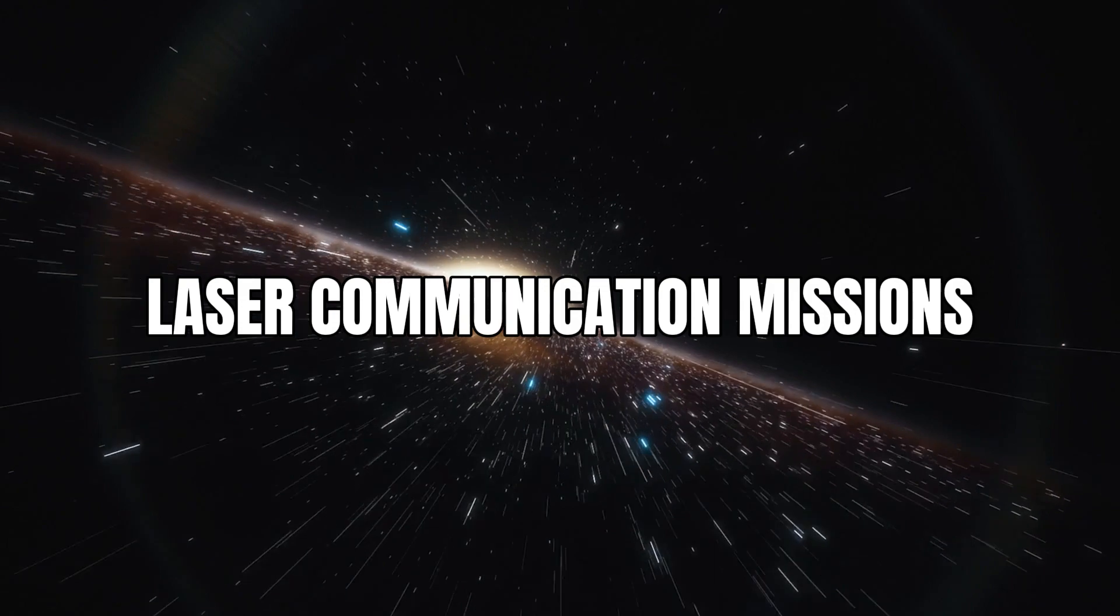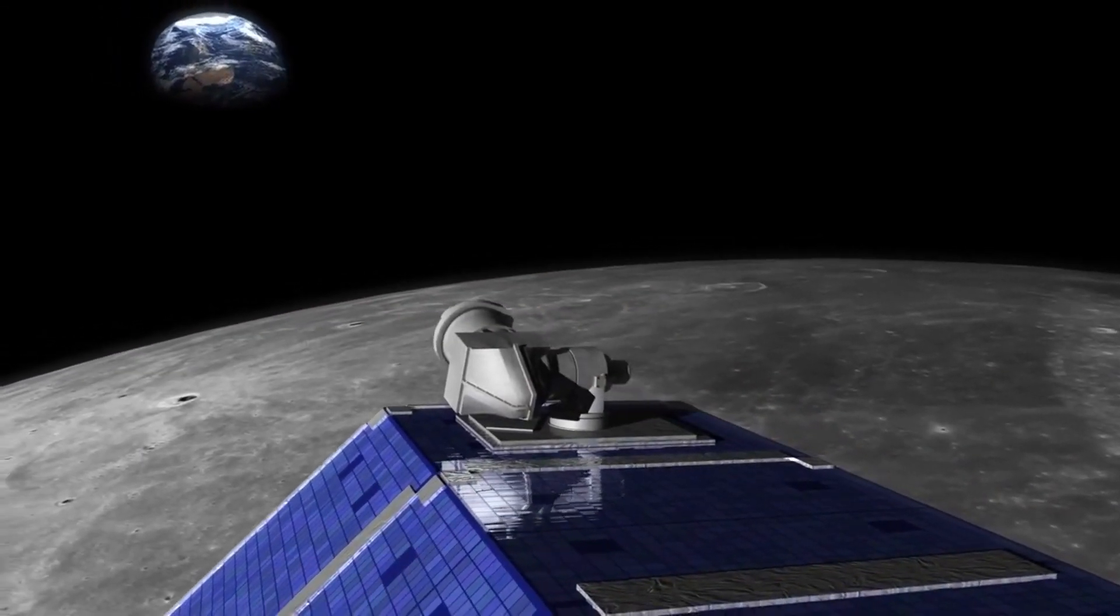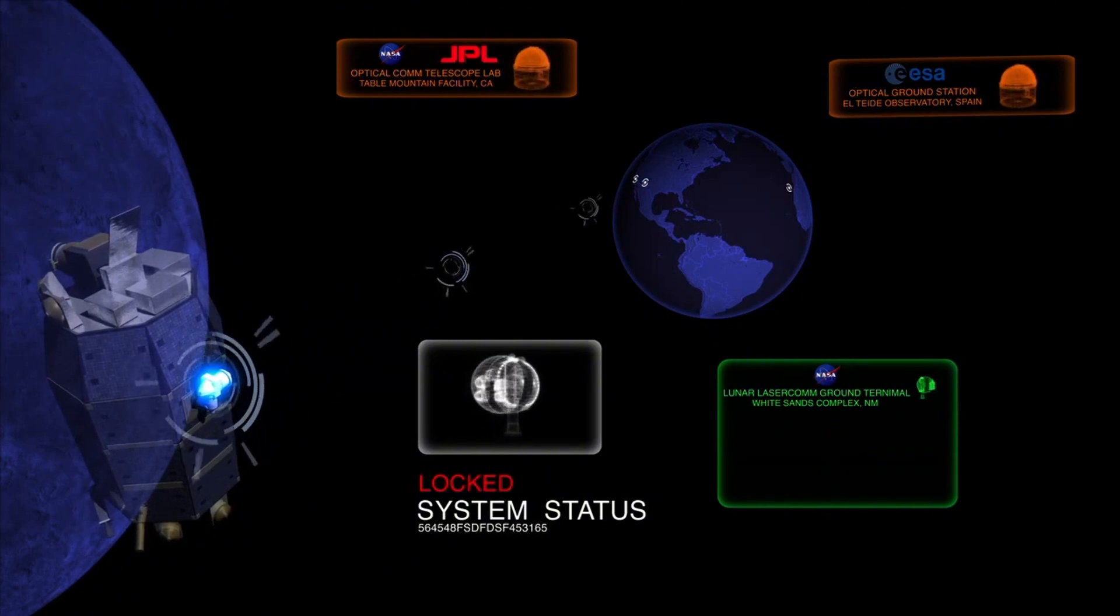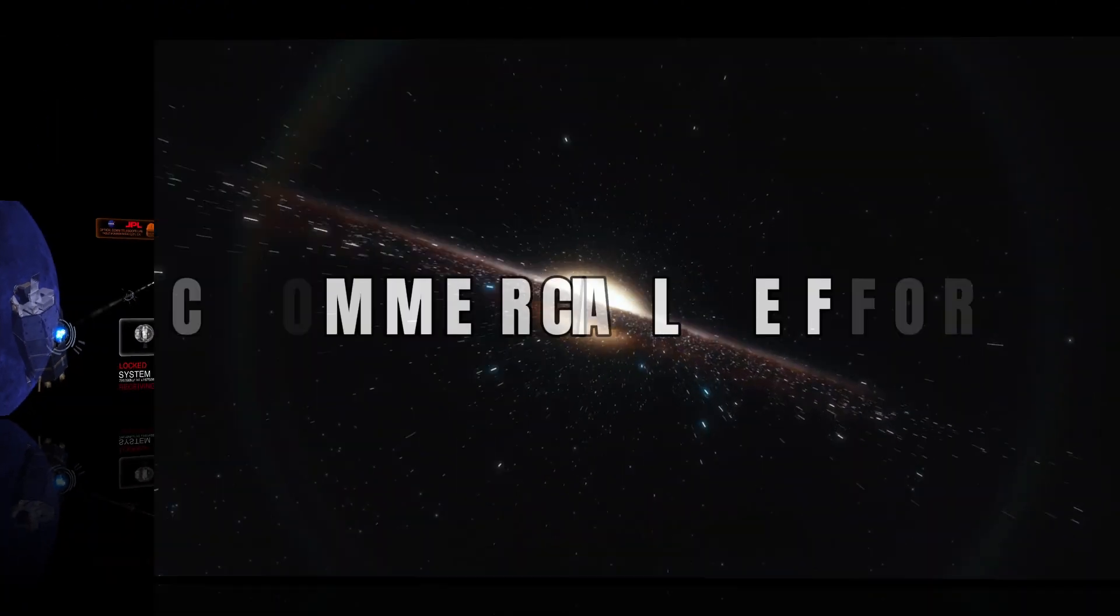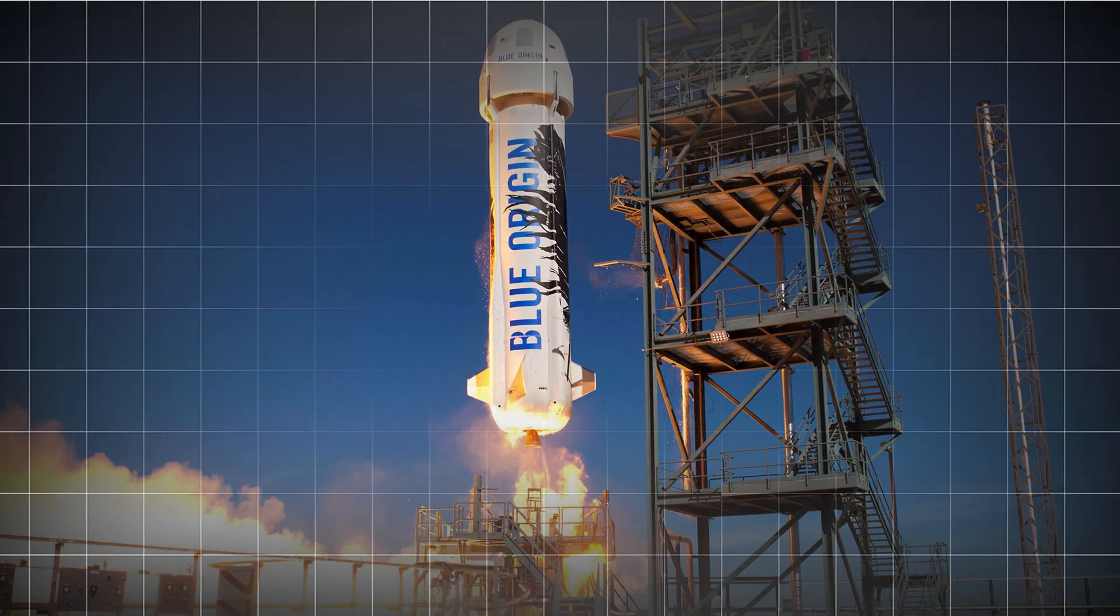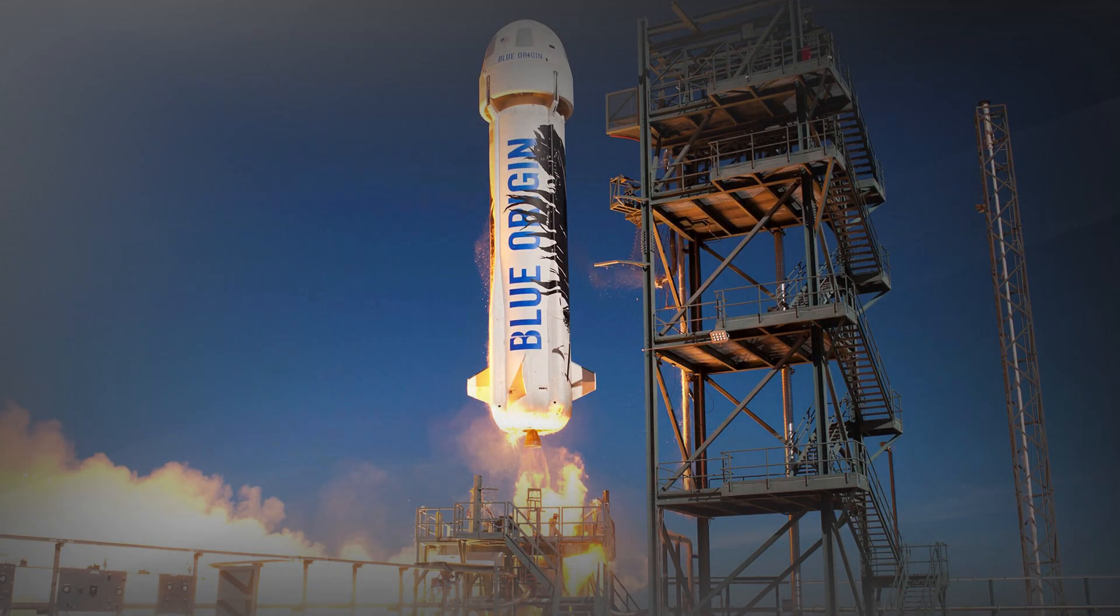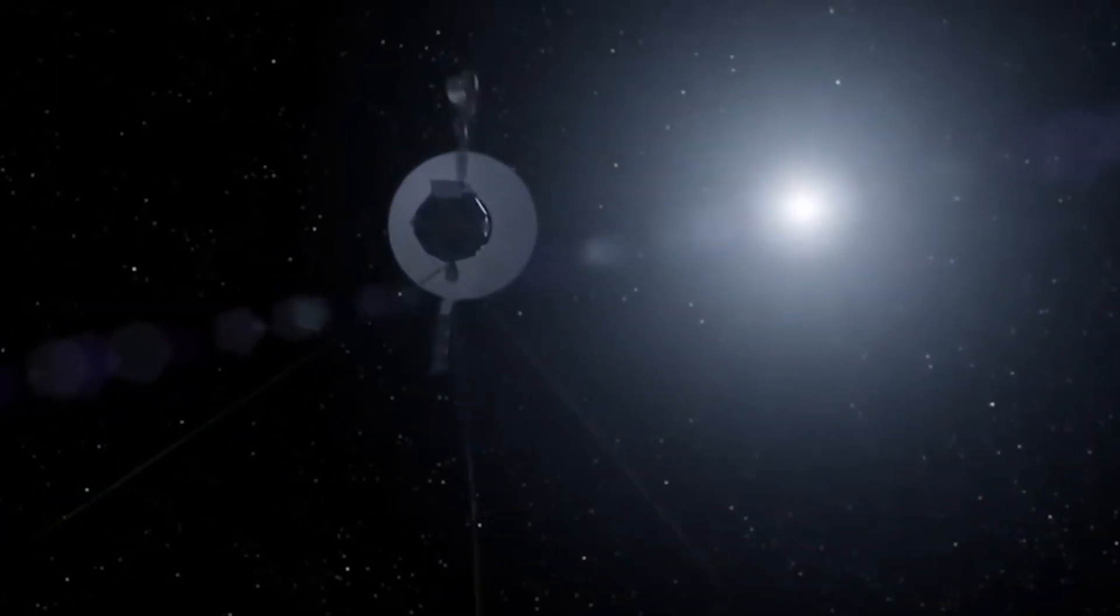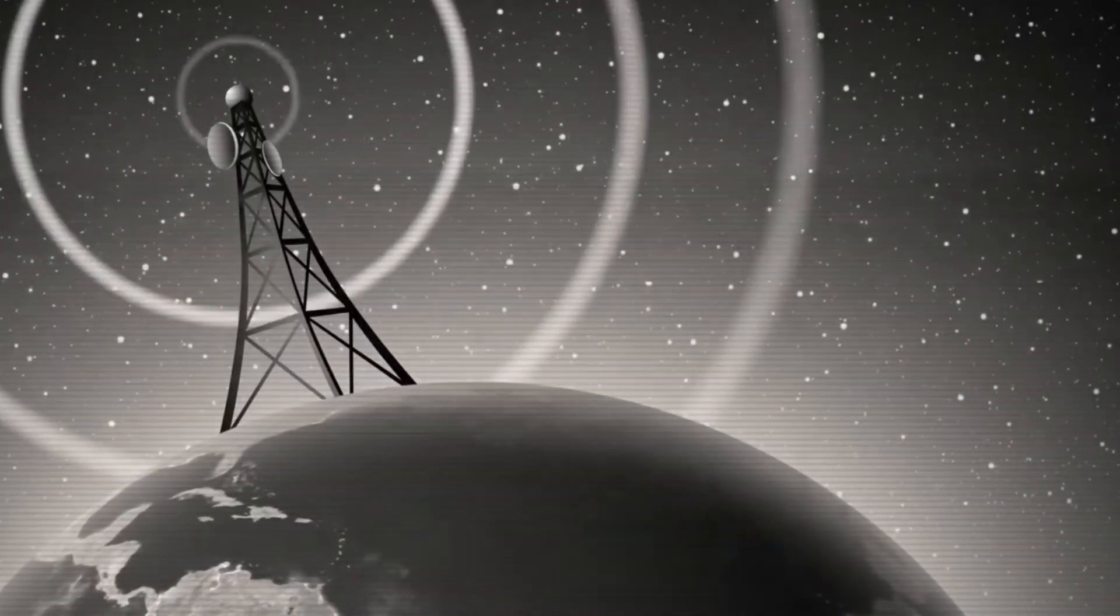Laser communication missions: the Artemis program, aimed at returning humans to the Moon, is set to include laser communication systems for high-speed data transmission. Commercial efforts: companies like SpaceX and Blue Origin are exploring ways to extend internet services beyond Earth with Mars colonization in mind. While challenges remain, the progress is undeniable. In the coming decades, the interstellar internet could evolve from a prototype to a fully functional network, enabling humanity to thrive as a multi-planetary species.